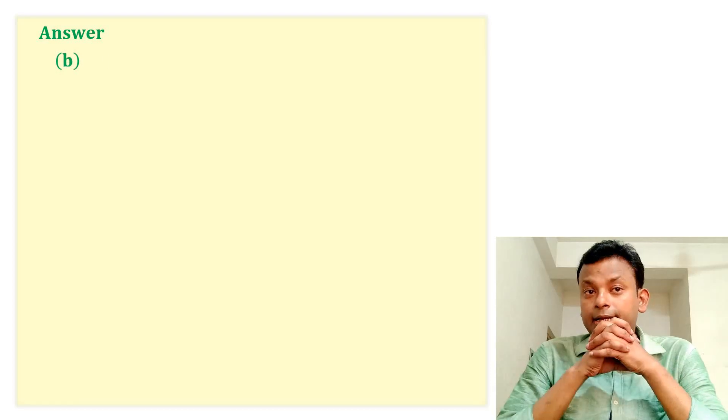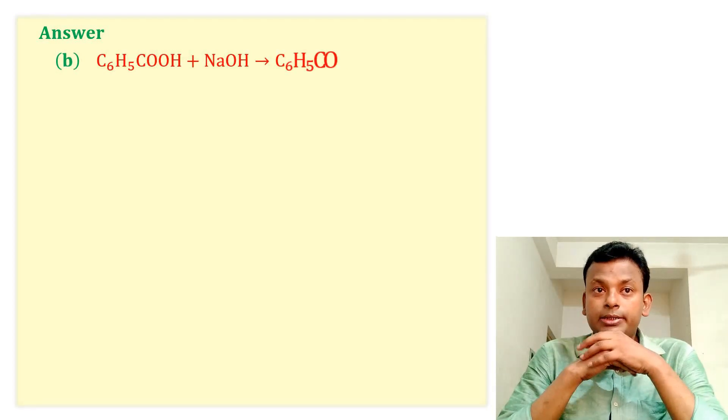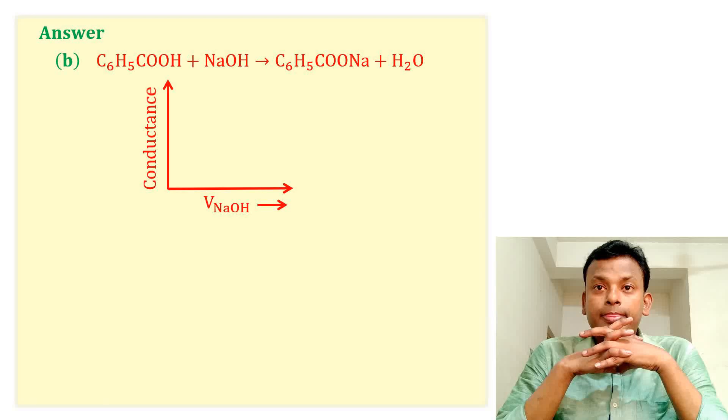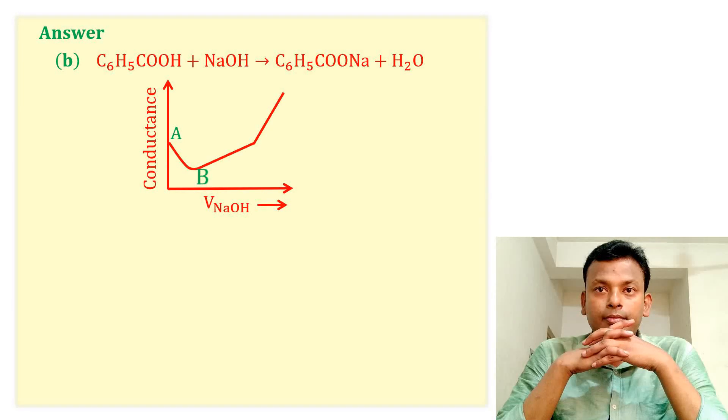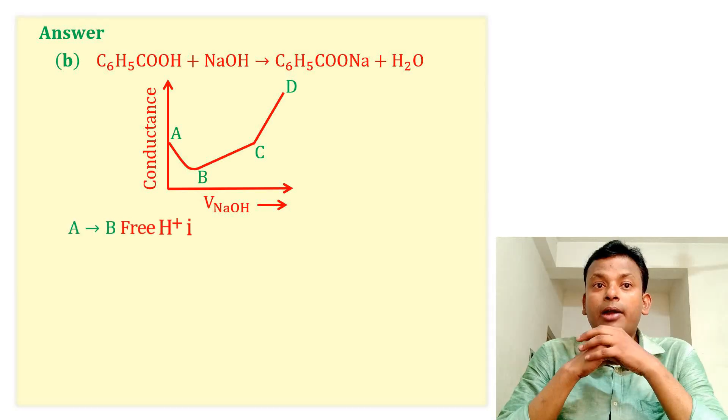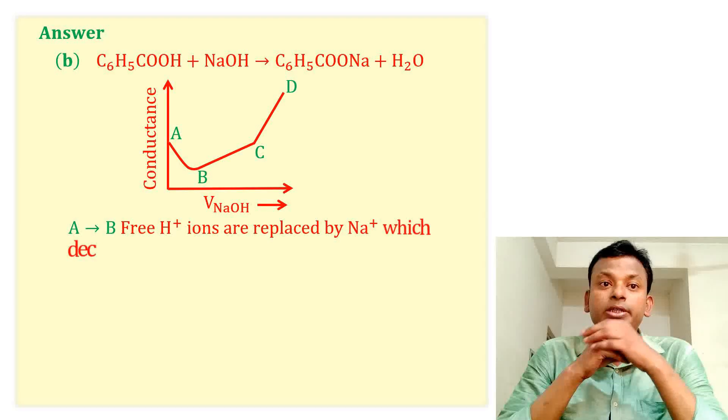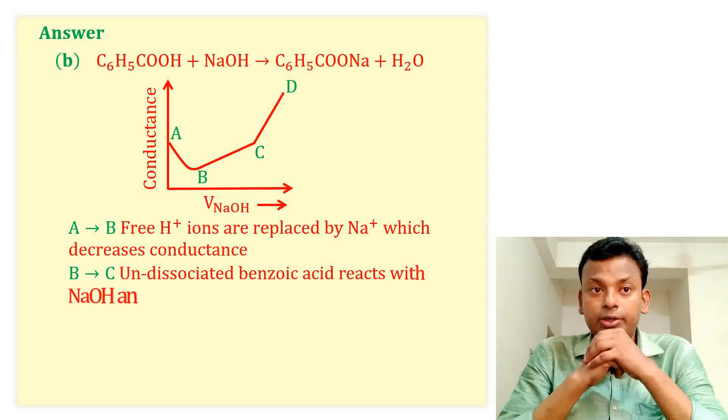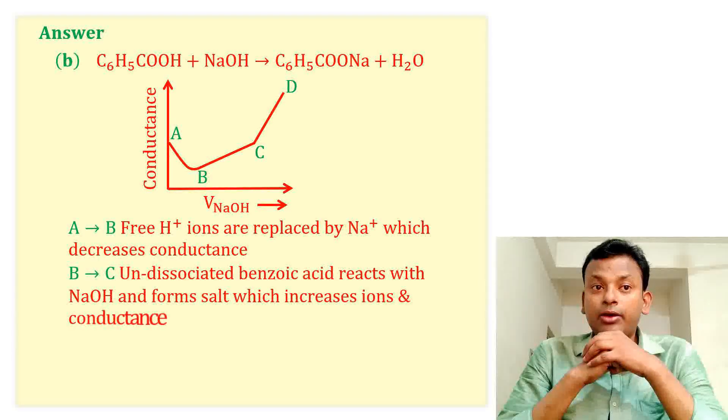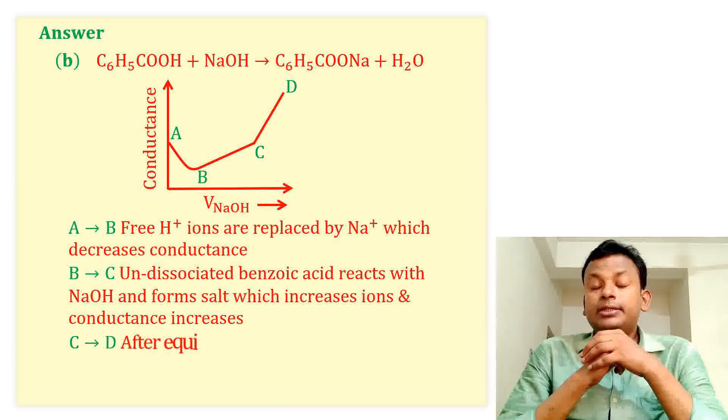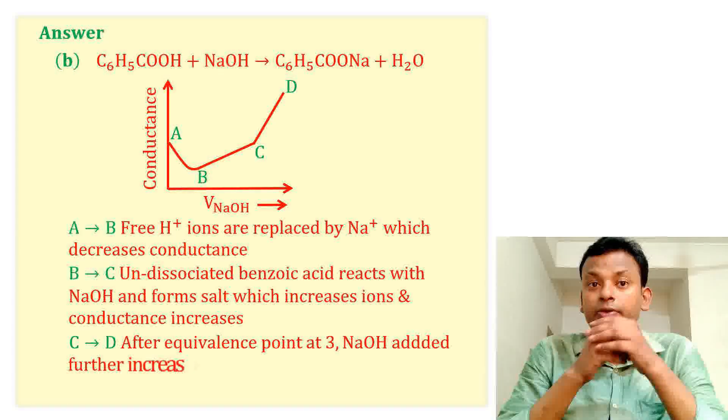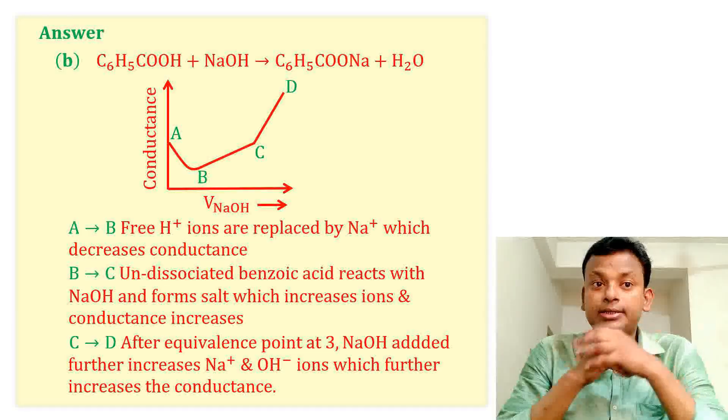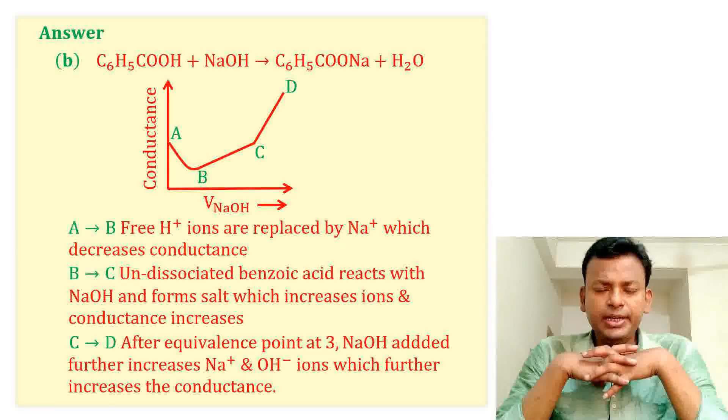Option B is correct answer. C6H5COOH plus NaOH gives C6H5COONa plus H2O. This is the graph. A to B: H+ ions are replaced by Na+ which decreases the conductance. B to C: undissociated benzoic acid reacts with NaOH and forms salt which increases ions and conductance. C to D: after equivalence point, NaOH added further increases Na+ and OH- ions, which further increases conductance.